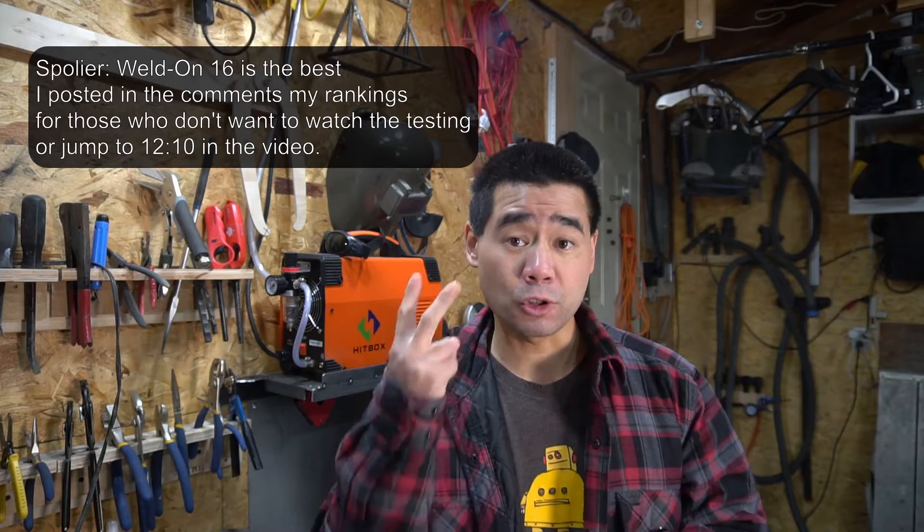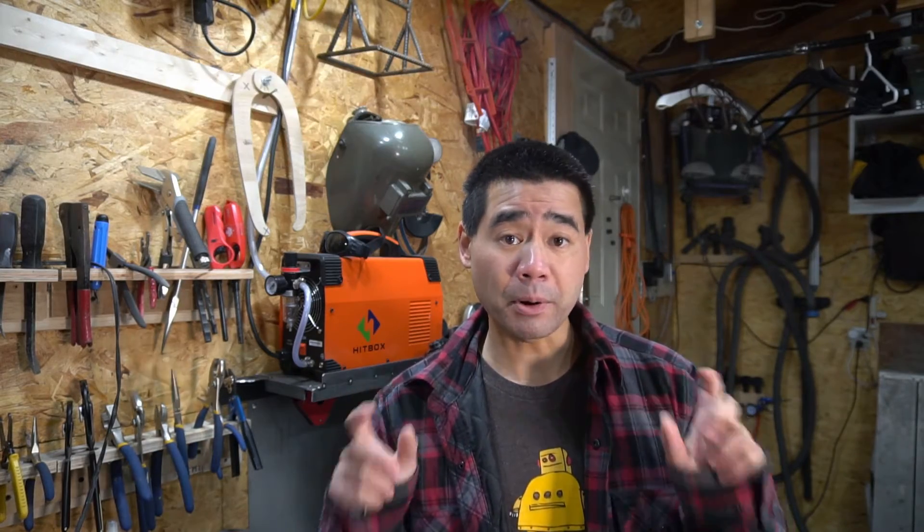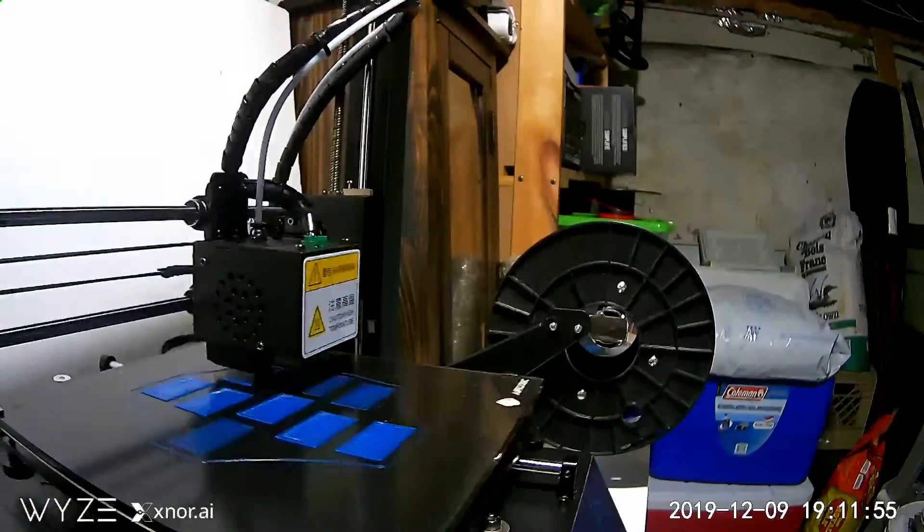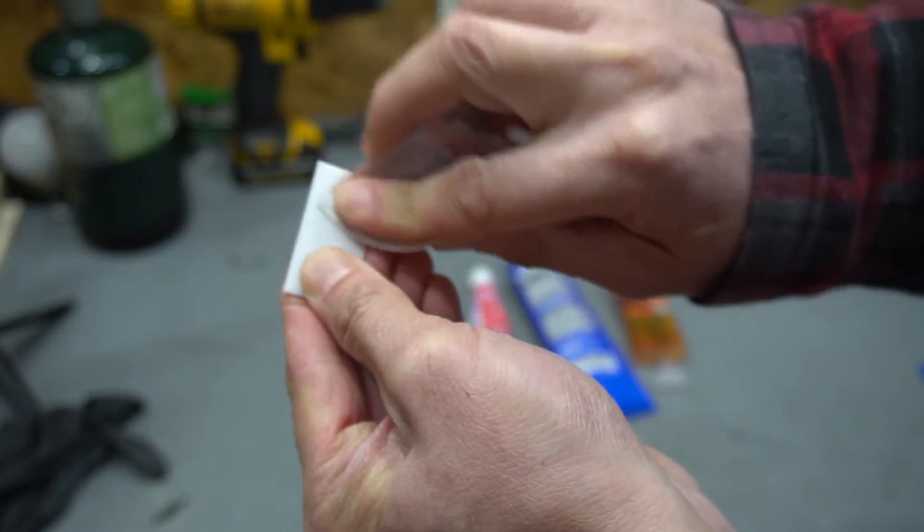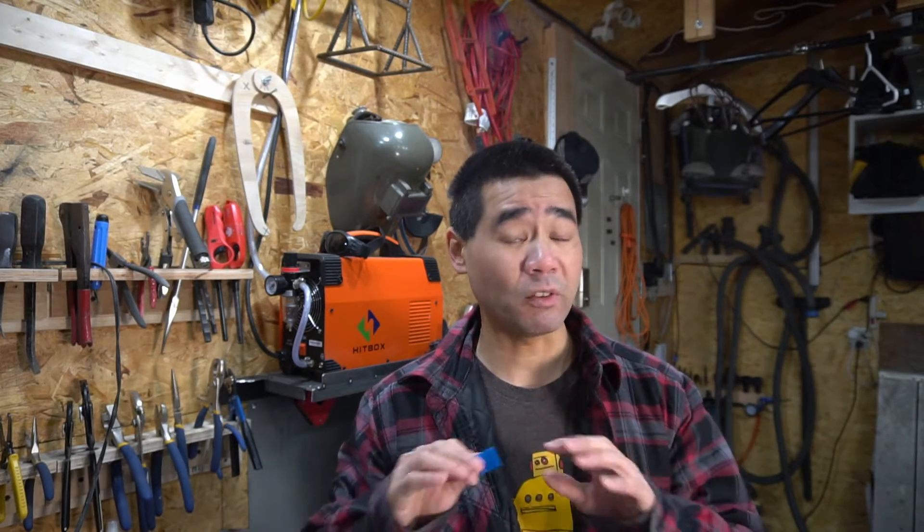I'm going to conduct two tests with several different adhesives. I printed off a bunch of flat pieces of PLA for testing, pieces like this. For the first test, I'm going to sand the pieces of PLA for maximum surface area for the glues to adhere. For the second test, I'm going to leave the PLA pieces as is with no sanding.